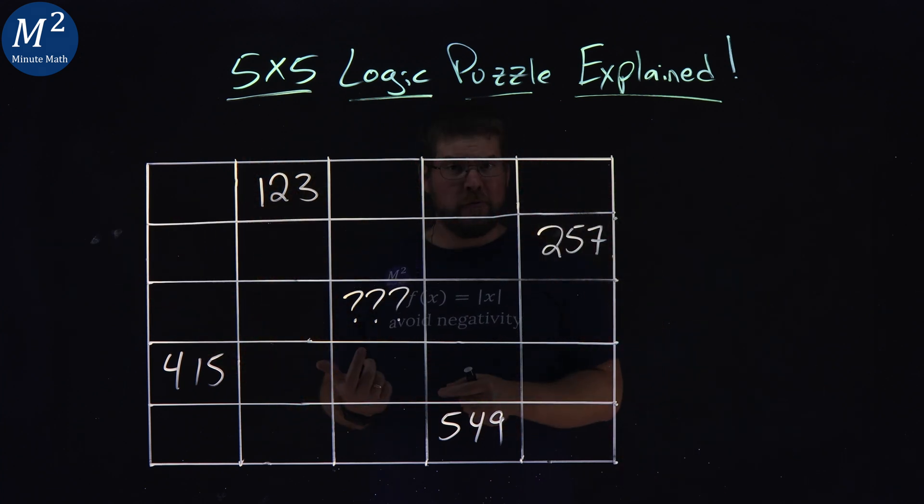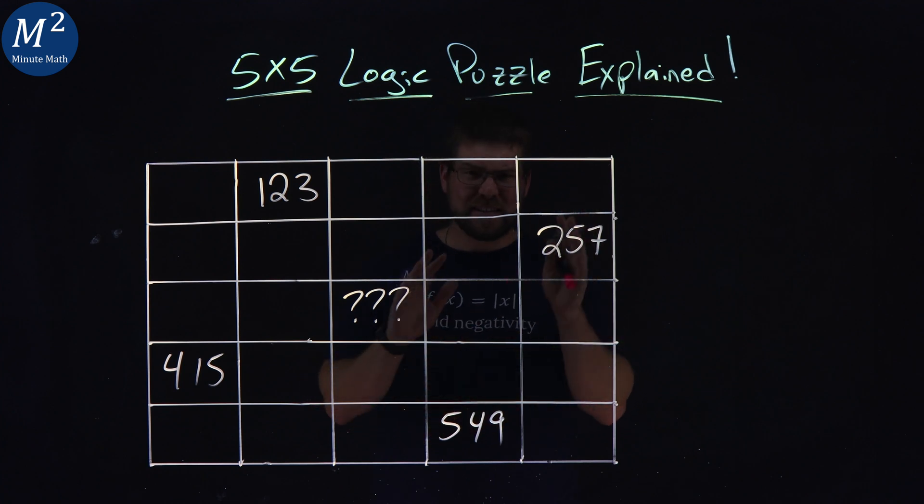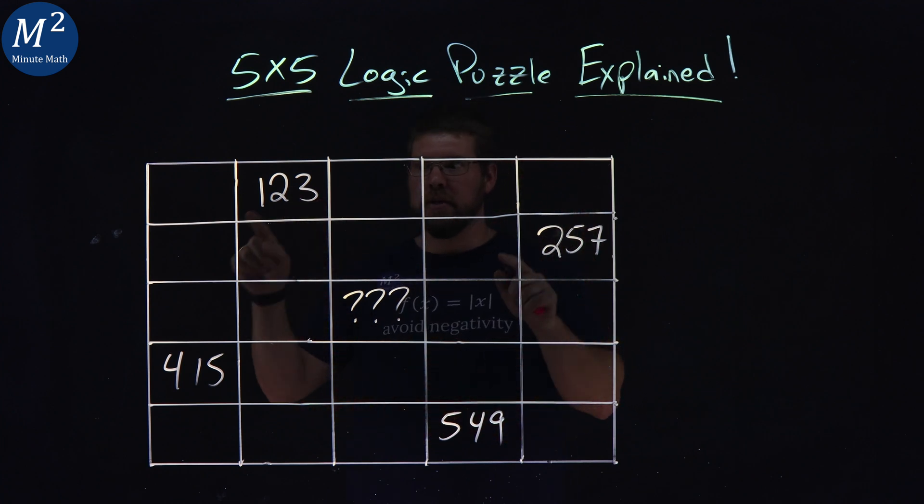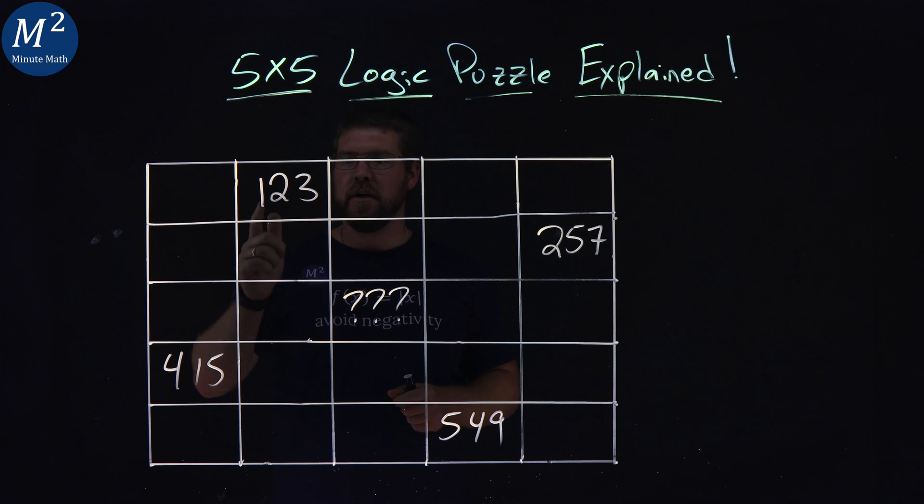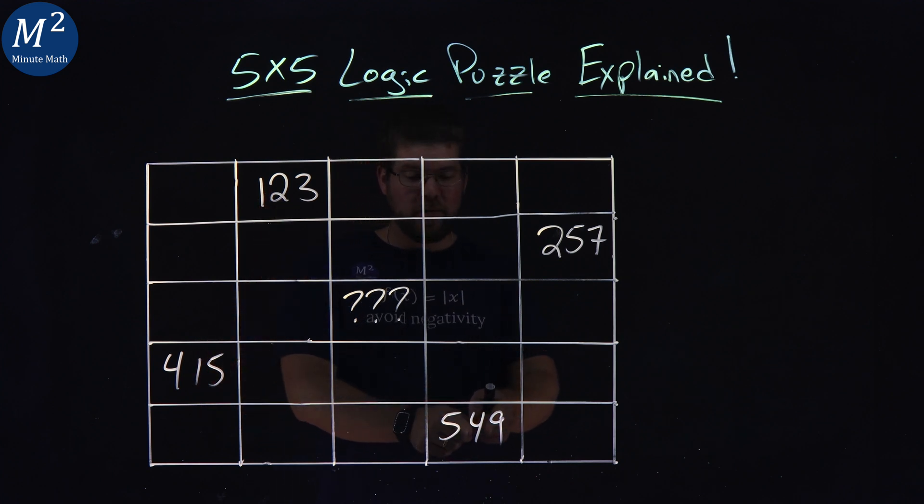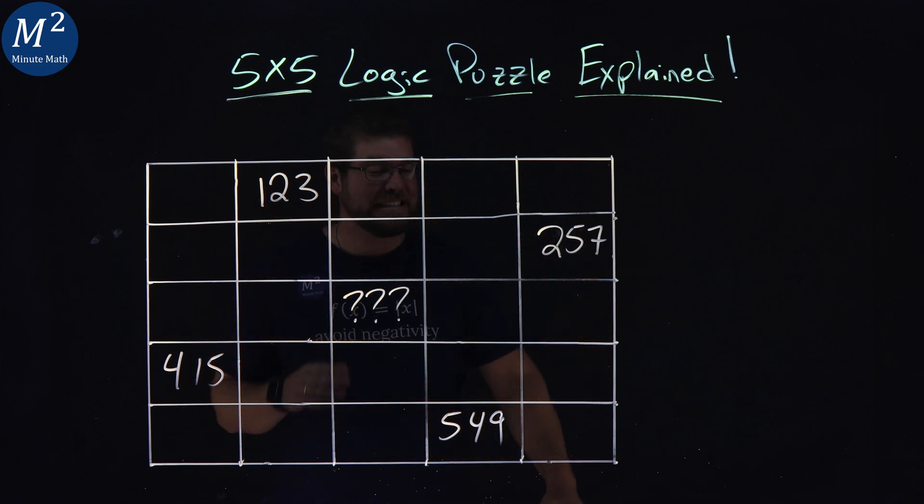The puzzle is this: We got a grid that's 5x5 and we have just some select numbers that are given in each one of these boxes. 415, 123, 549, and 257.